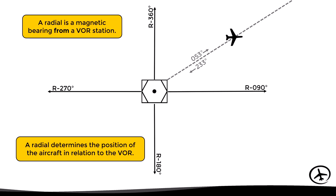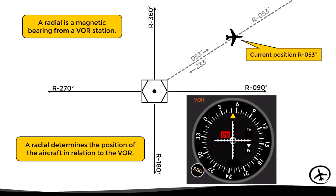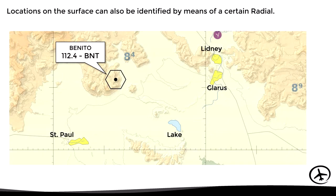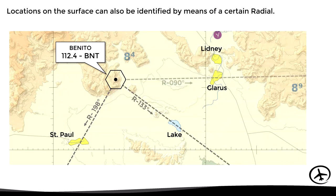For example, this aircraft is on the 053 radial from the VOR. In this order of ideas, visual checkpoints on the ground can also be identified by means of a certain radial from a nearby VOR. For example, we can see that the town of St. Paul is on the 198 radial from Benito VOR. The lake is on the 133 radial, Glarus on the 090, and Lydne on the 079.